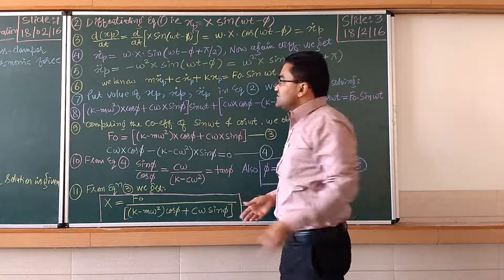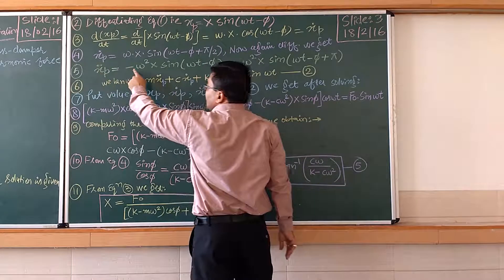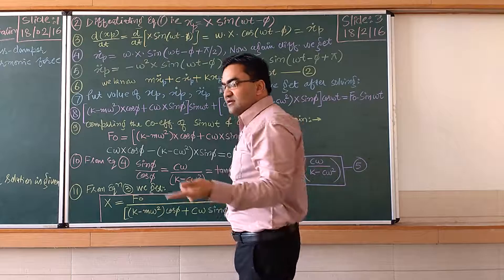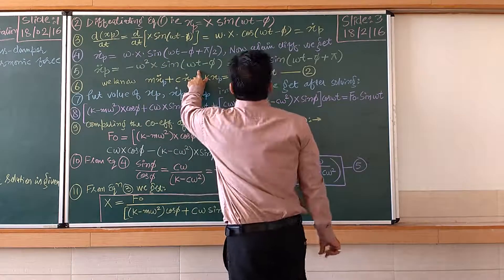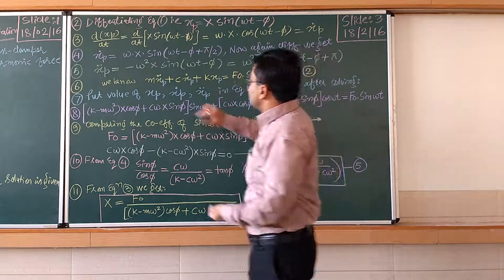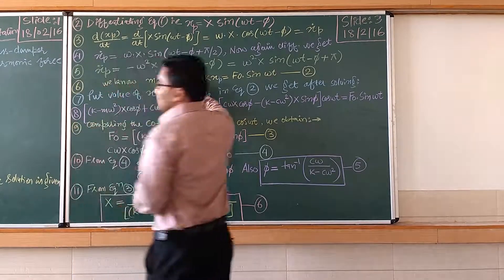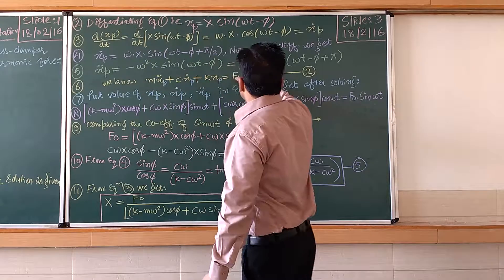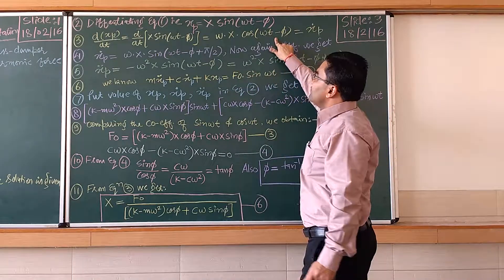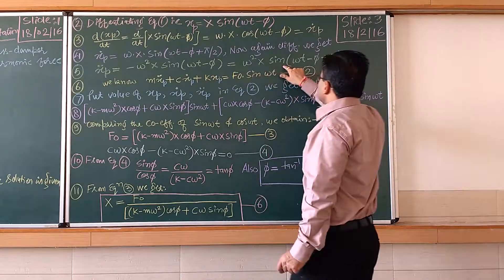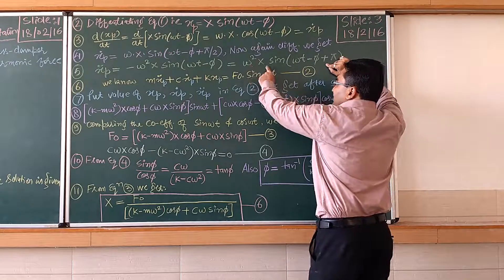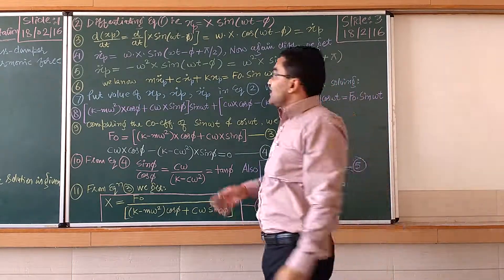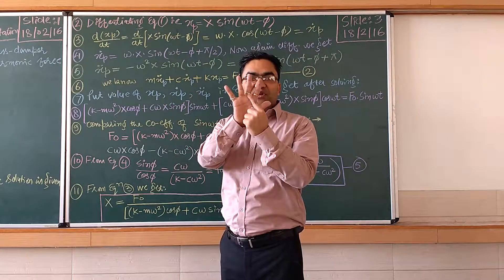Differentiating again to get Xp-double-dot: differentiating Xp-dot once more gives Xp-double-dot = −ω²·X·sin(ωt − φ), which can also be written as ω²·X·sin(ωt − φ + π). We have thus successfully obtained Xp, Xp-dot, and Xp-double-dot for substitution into the differential equation.